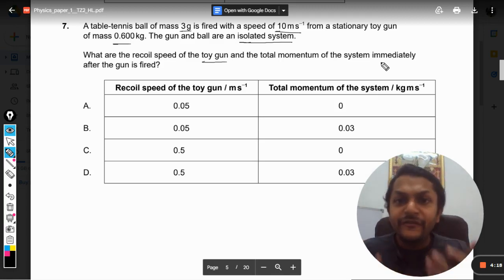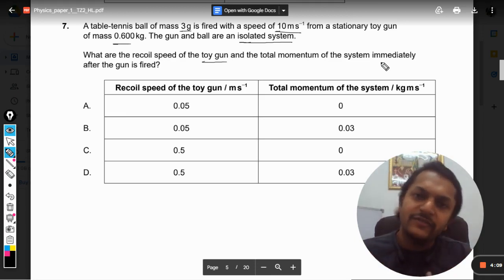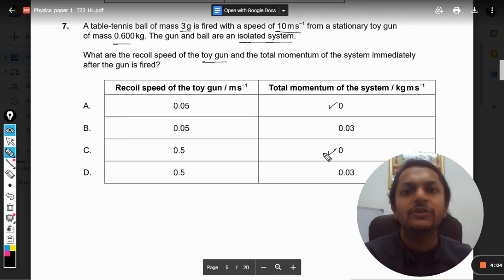So what is the total momentum before firing the ball? The momentum is zero. So it means that the final momentum will also be zero, even after the ball is fired. So our answer for the total momentum of the system should come out to be equal to zero, because initially it was zero and now it is equal to zero.